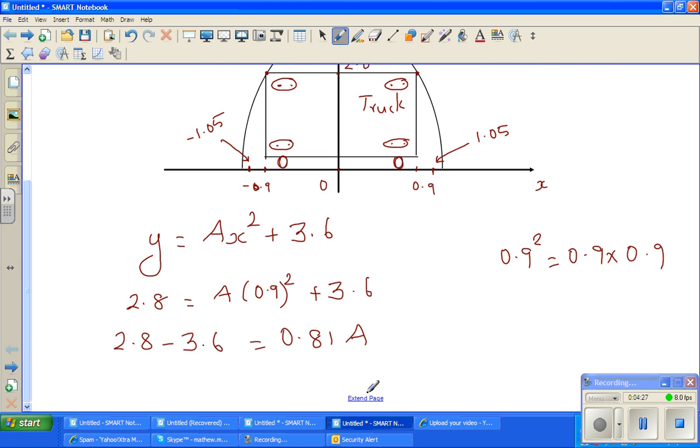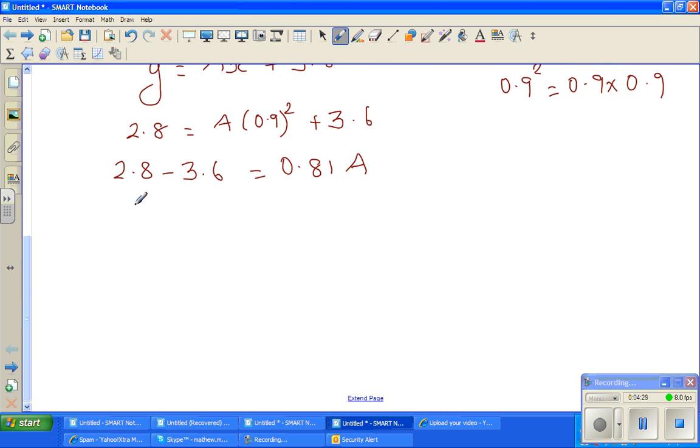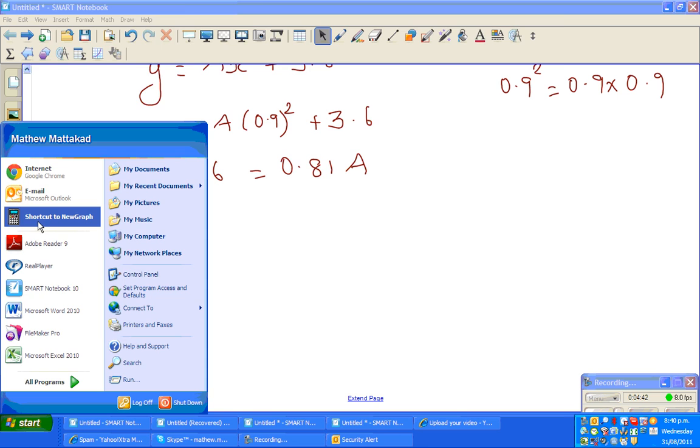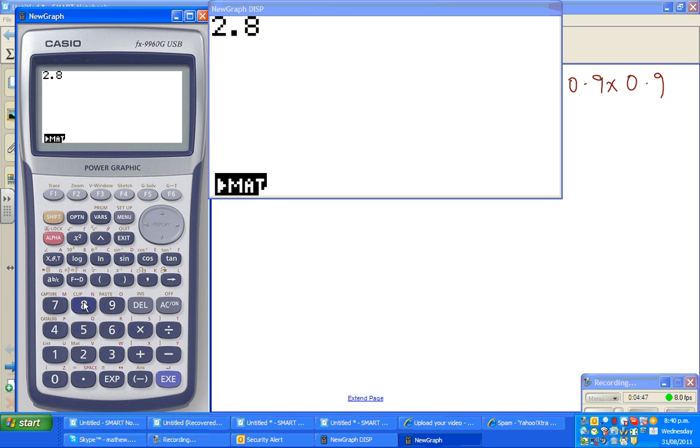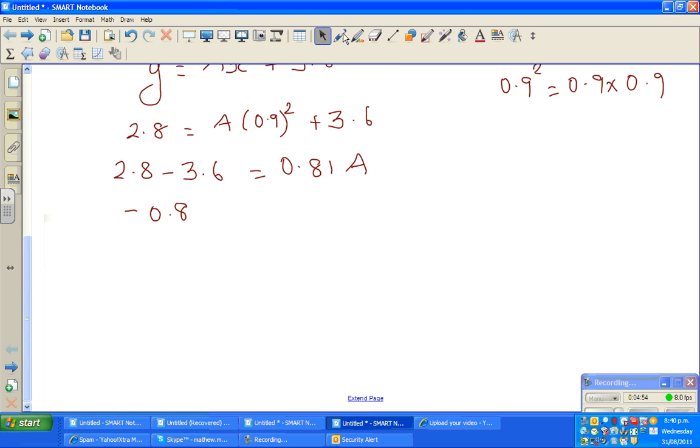So this is 2.8 minus 3.6 is minus 0.8. Am I right? So it's always good to check. So menu, 2.8 minus 3.6 is minus 0.8. I was right. So minus 0.8 equals 0.81a. I'm now going to divide both sides by 0.81.